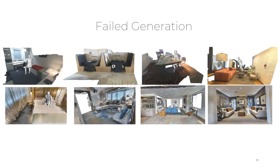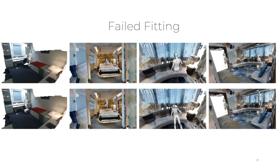We find two types of failure cases in our experiments. First, our generative models produce failed cases probably because the test scene is much different from training scenes — these results ignore test scene structures and have implausible body-scene interactions. Second, the scene geometry fitting does not always work well; it might lead to physically plausible but abnormal poses. Since we did not model physics like gravity, the results after fitting might float and touch the ceiling. We also find this fitting process is not robust to noisy scene structures.